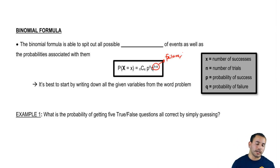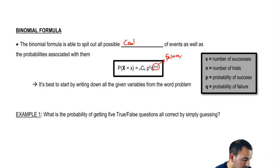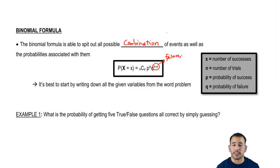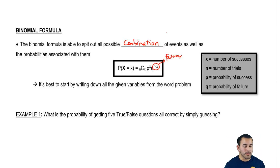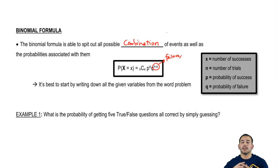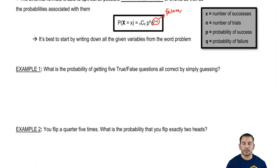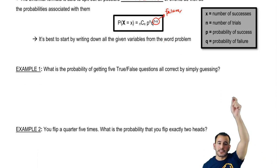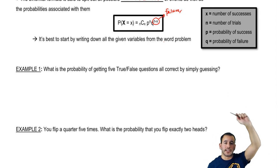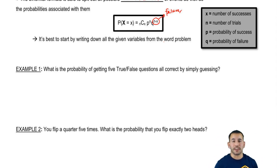The binomial formula is able to spit out all possible combinations of events. It takes into account all the different ways events can happen together and the probabilities associated with them, and spits out a probability. It's best to start by writing down all the given variables: x is number of successes, n is number of trials, p is probability of success, and q is probability of failure.